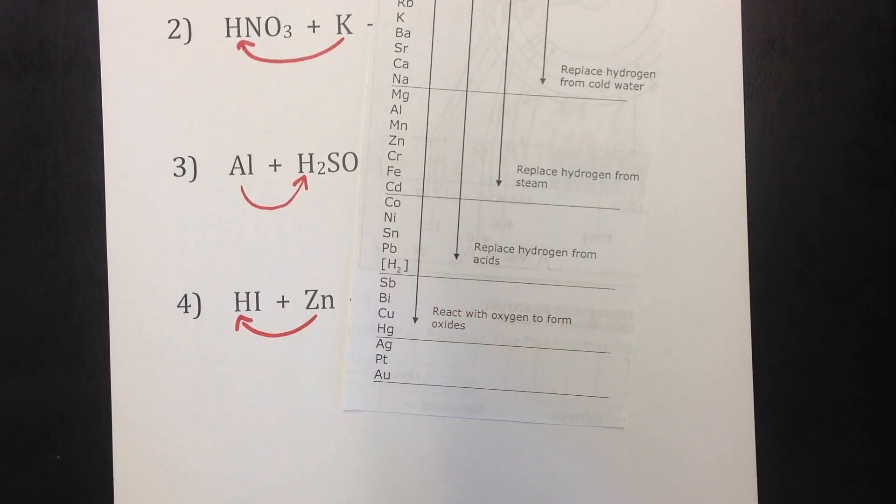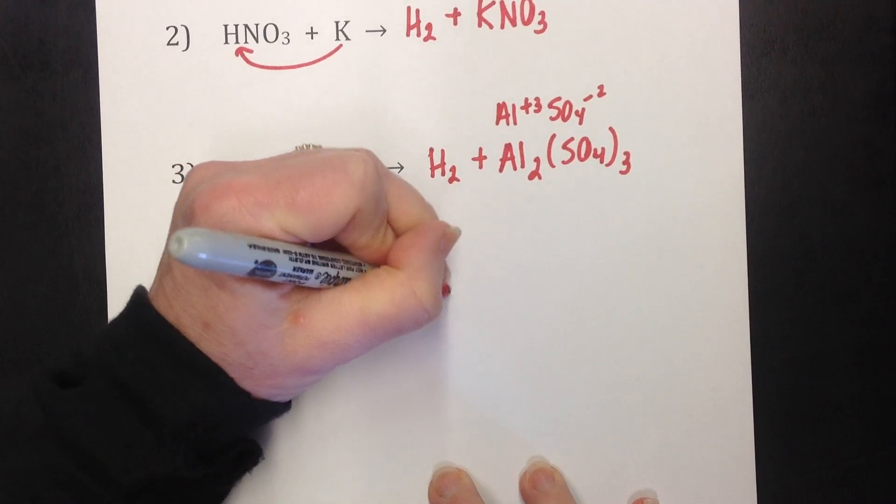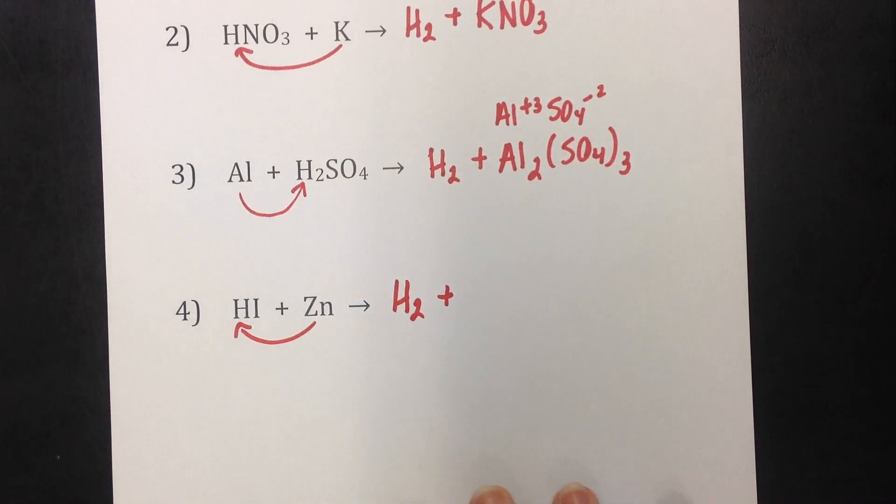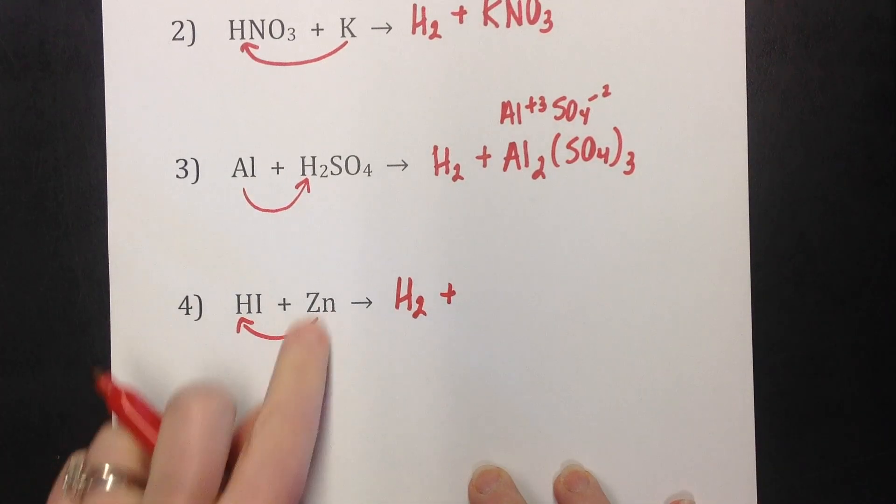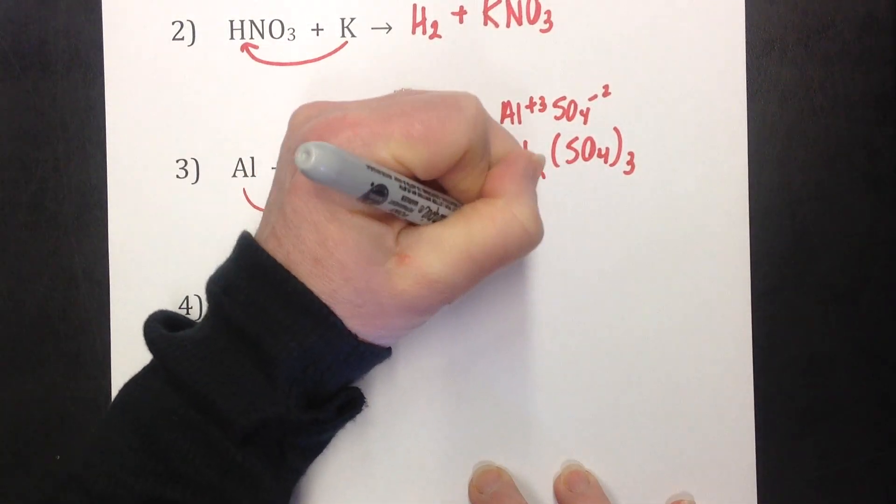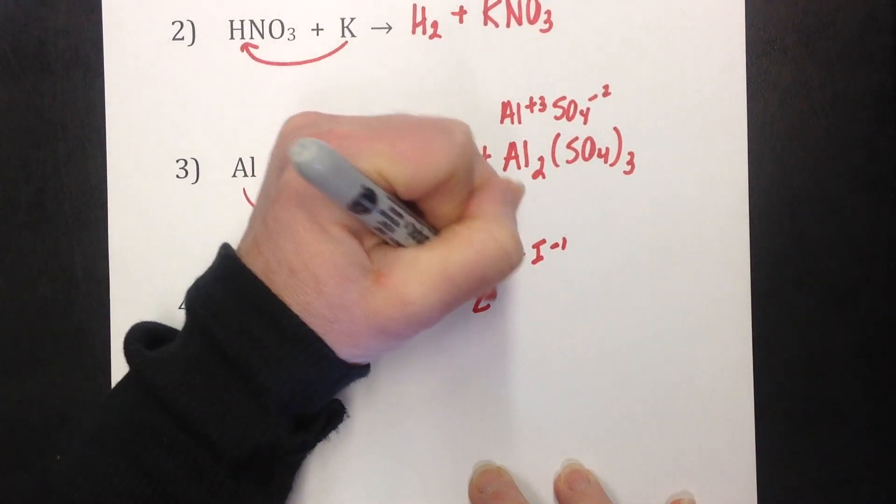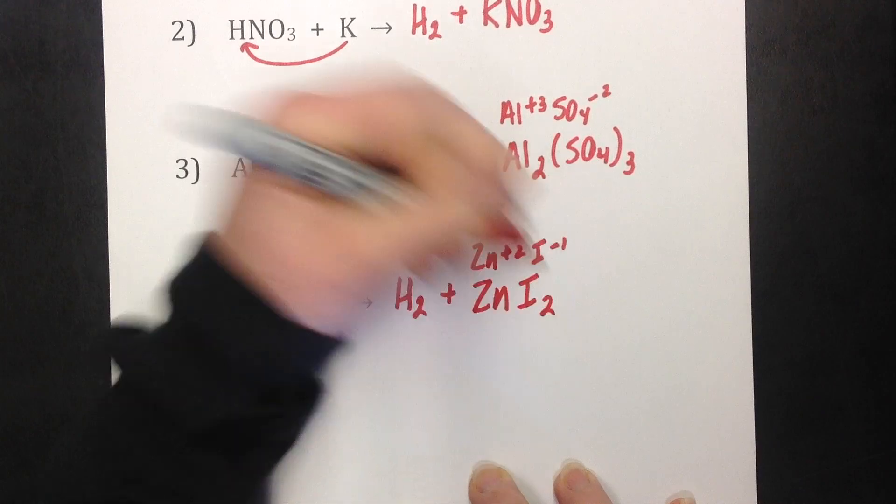It does. It's right there. Hydrogen just got kicked to the curb. Don't forget to put the two on it because it is diatomic. Zinc is going to hook up with iodine. Zinc is always a plus two. Iodine or iodide in this case because it's an anion is a minus one. ZnI2.